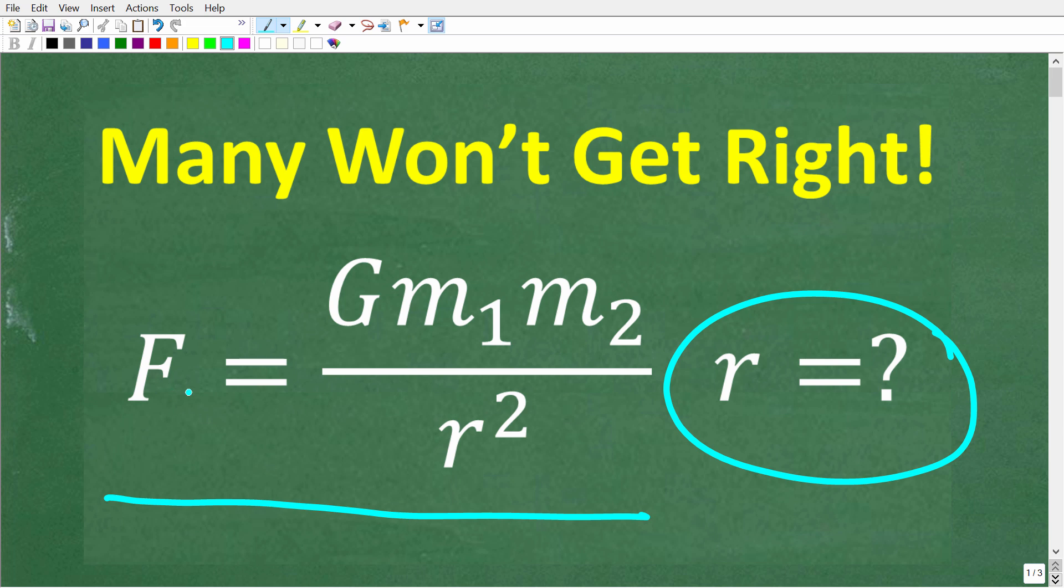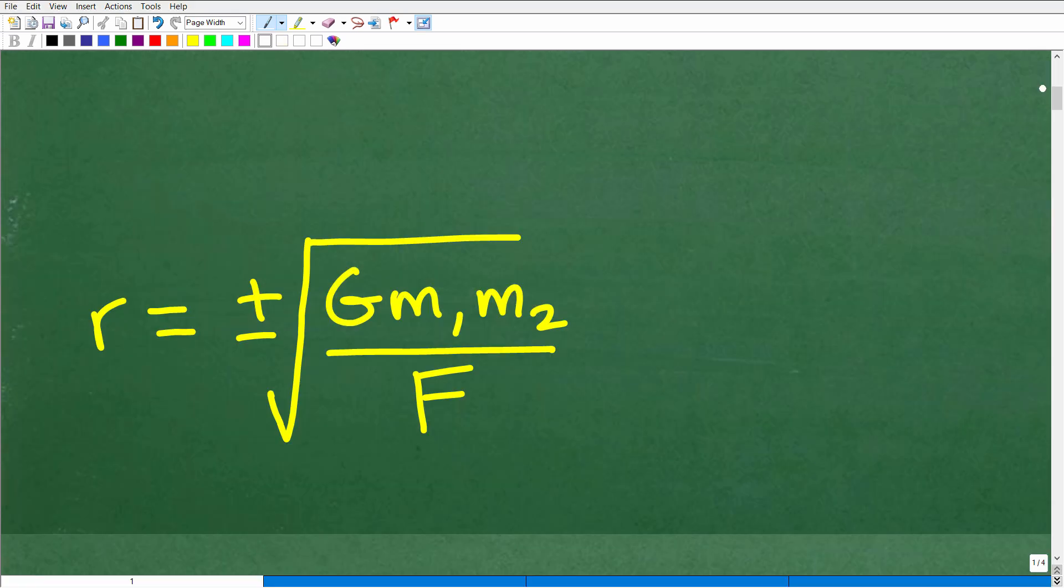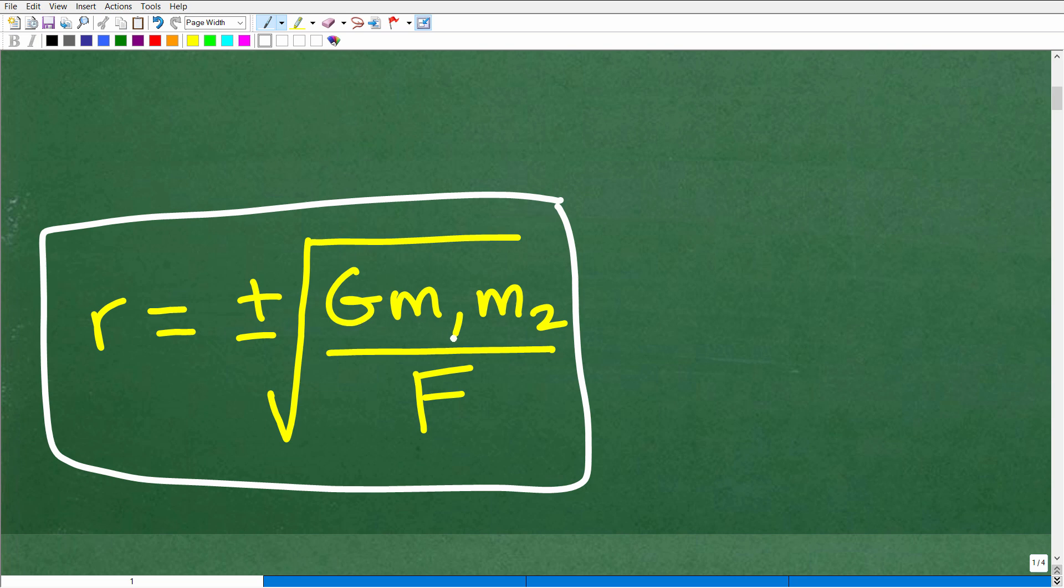So one more time, we have F is equal to G times M1 times M2 over R squared. So what is R equal to when we rewrite this formula? So R is going to be equal to plus or minus the square root of G times M1 times M2 over F.